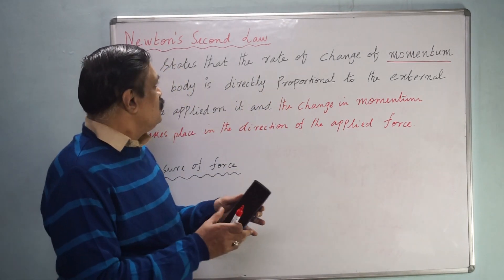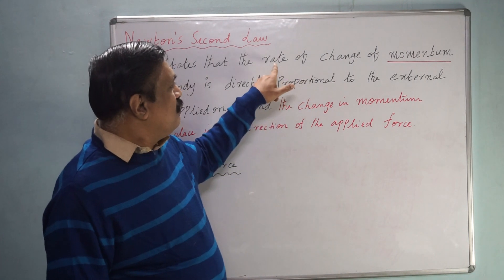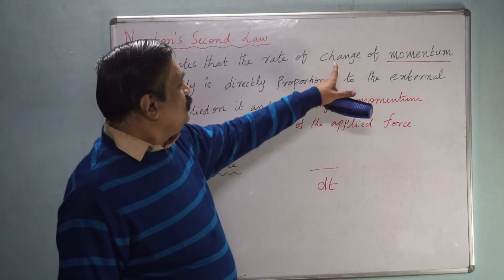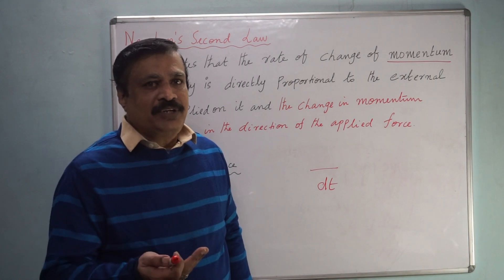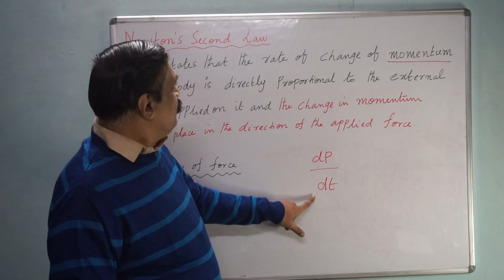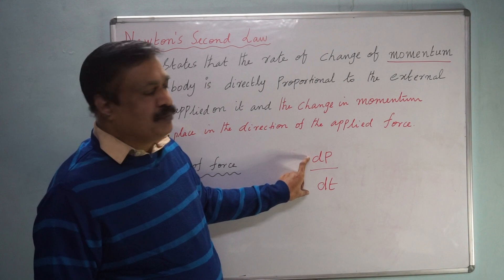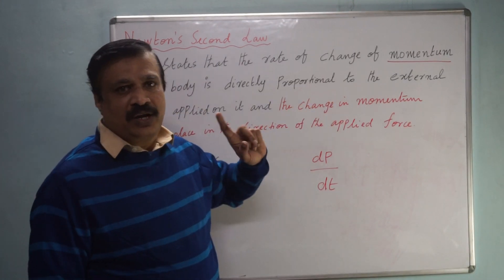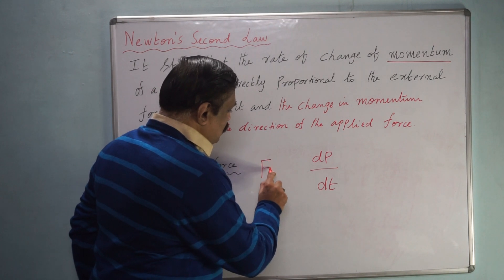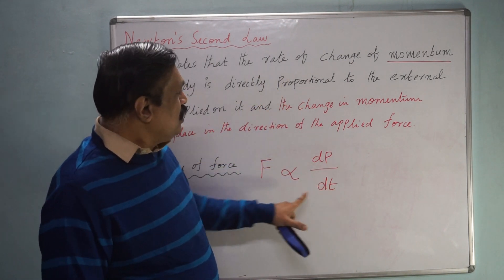Now the definition of Newton's second law states that the rate of change of momentum — and I already told you, whenever the word 'rate' comes, then in the denominator you put dt. Change of momentum means dp, therefore dp by dt. Rate of change of momentum of a body is directly proportional to the external force applied. That means F is proportional to dp by dt. This is the equation for Newton's second law.